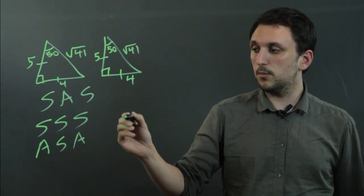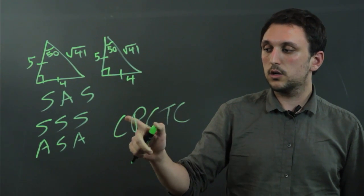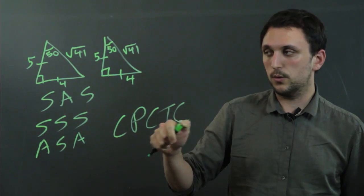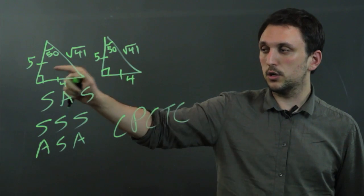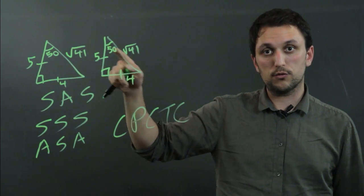One thing to remember is the CPCTC, which is corresponding parts of congruent triangles are congruent, meaning this 5 and this 5 have to be equal if they're congruent triangles. This 90 and this 90 have to be equal if they're congruent triangles.